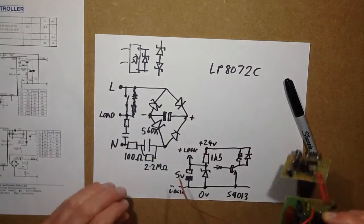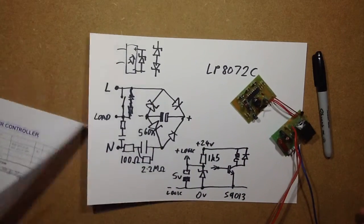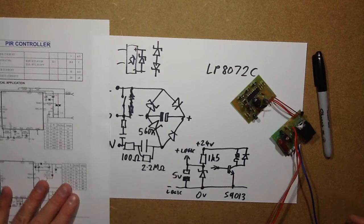But yeah, I won't go into this in too much detail. You can download this data sheet online if you do a search in Google for LP8072C, but you know, other than that it actually looks okay, it doesn't look too bad at all. That was quite enjoyable.